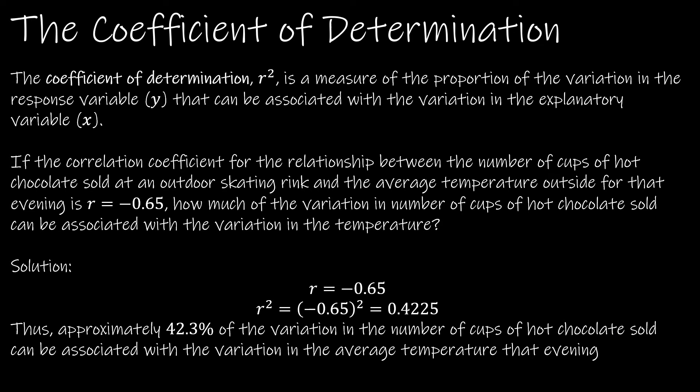In our calculation for whether or not this was significant, we did find a value called R-squared, but we haven't talked about what it means. So the coefficient of determination is R-squared, and it essentially measures the proportion of the variation of the response variable, so how much Y changes, that can be associated with the variation in the explanatory variable. So how much of the changes in Y are accounted for by changes in X.